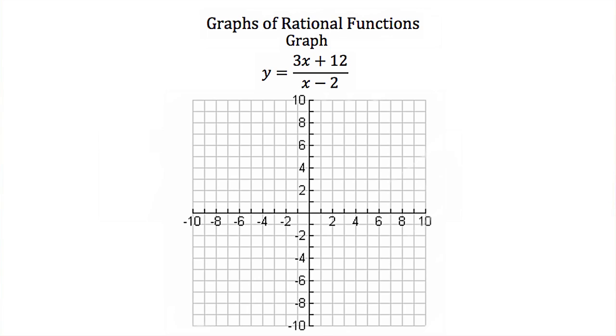To find our vertical asymptote, we know those come from when our domain is restricted. Our domain is restricted when our denominator is equal to 0, which means x minus 2 cannot equal 0. Now if I solve this inequality and add 2 to both sides I'll get x cannot equal 2. Which means that my vertical asymptote is the line x equals 2.